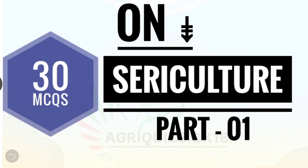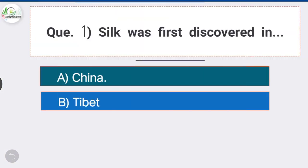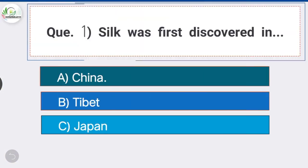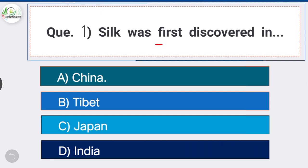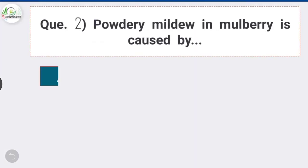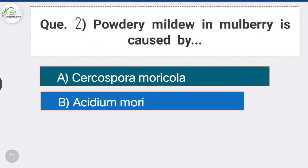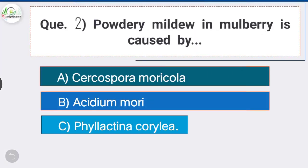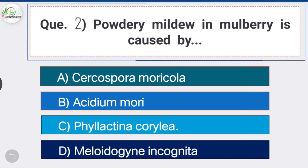Question number one: silk was first discovered in — option A is the correct answer — China. Silk was first discovered in China. Question number two: powdery mildew in mulberry is caused by — option C is the correct answer.